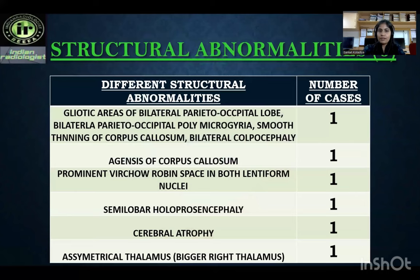Structural abnormalities: gliotic areas of bilateral parieto-occipital lobe with bilateral parieto-occipital polymicrogyria, smooth thinning of corpus callosum and bilateral colpocephaly — one case. Agenesis of corpus callosum — one case. Prominent Virchow-Robin spaces in the lentiform nucleus — one case. Semilobar holoprosencephaly — one case. Cerebral atrophy — one case. Asymmetrical thalamus — one case.